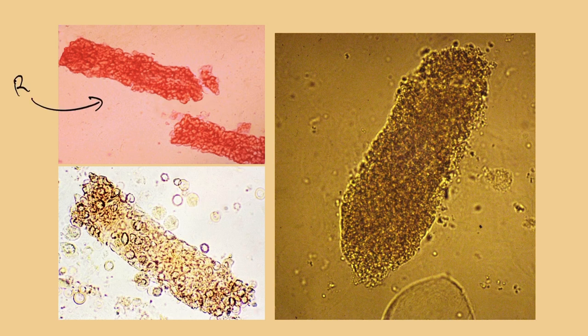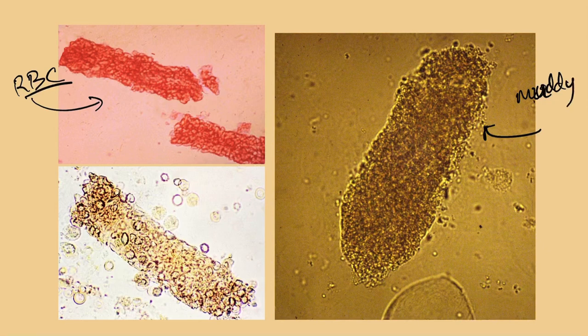A red blood cell cast is what we expect in glomerular disease, because red blood cells enter from the arterioles and can't be reabsorbed — neither can protein — so everything gets into the nephron and stays there. A muddy brown cast, by contrast, is more granular in appearance. If you see a muddy brown cast, you're dealing with a tubular disease.